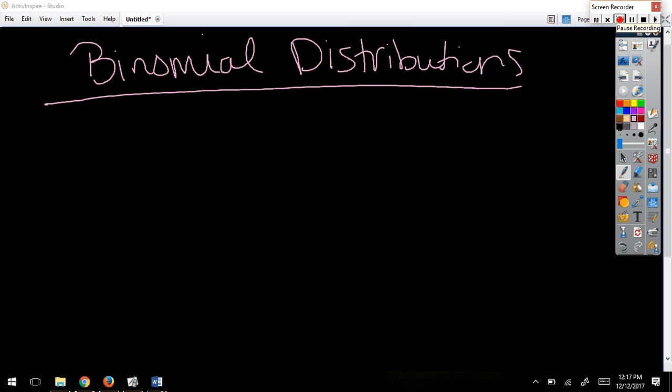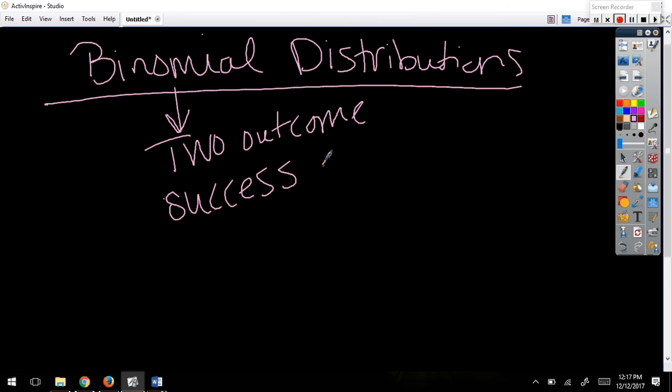Binomial distributions are still probability distributions, meaning it still has percentages that add up to one, no negatives. The difference here is there are only two outcomes. When you're trying to find your probability, there's only two things that can happen, and we call those successes or fails.